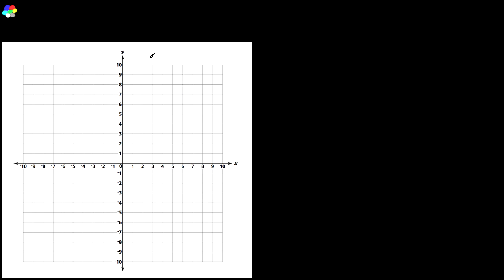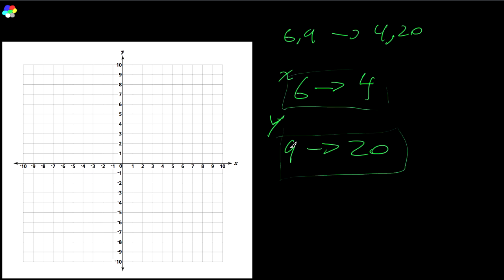Because when you're interpolating from 6, 9 to 4, 20, what you're really doing is you're doing two separate interpolations. You're doing one interpolation in the x from 6 to 4, and you're doing another interpolation in the y from 9 to 20. That's what you're doing. So you want to just apply the exact same technique that you used before, but apply it creating two different equations, one for the x, one for the y.